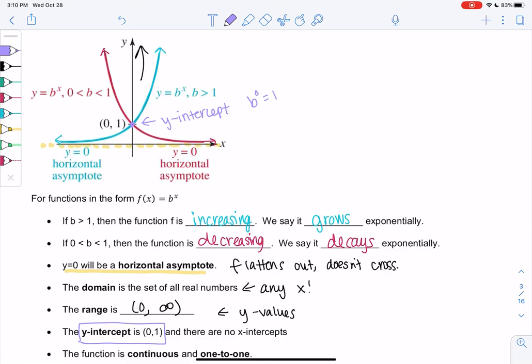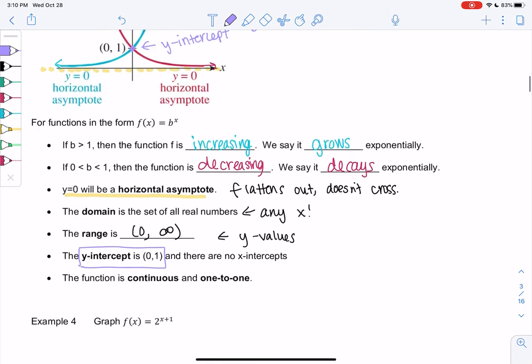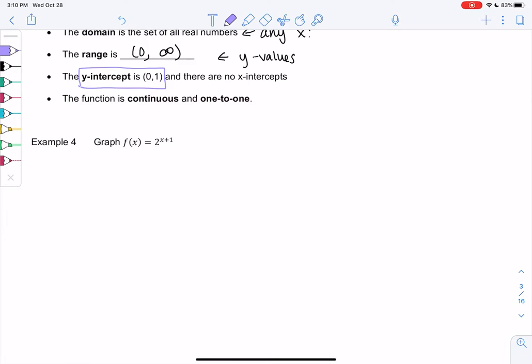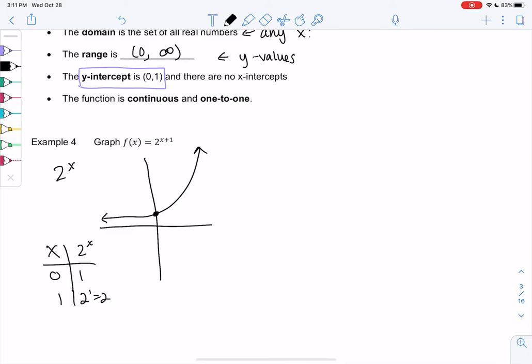So let's just graph two more in this video. So let's do 2 to the x plus 1. So I'm going to start with 2 to the x. I'm just going to find maybe two points on the graph to help us with the transformations. So if we have 2 to the x, I'm going to do the easy points, 0 and 1, and then 1 and 2 because 2 to the 1 is 2.